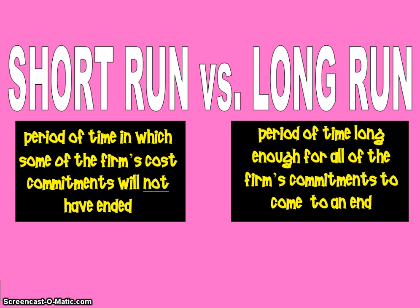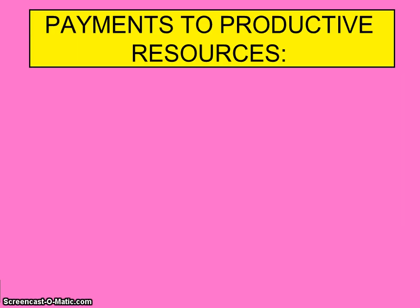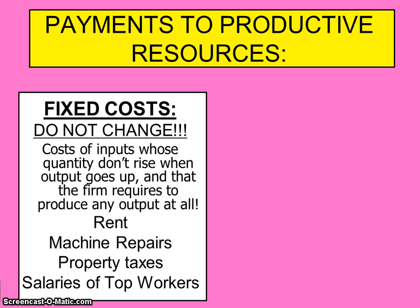In the long run, that's a period of time long enough for all the firm's commitments to have come to an end, so all costs are variable in the long run. The cost of production include the payments to the productive resources, and some of those costs are fixed and some are variable.